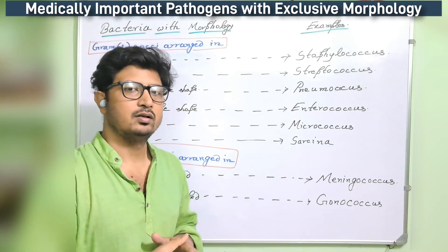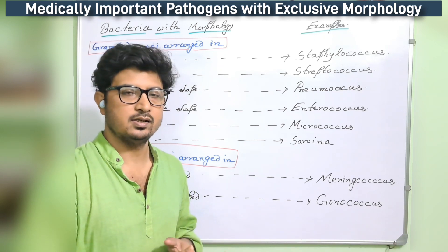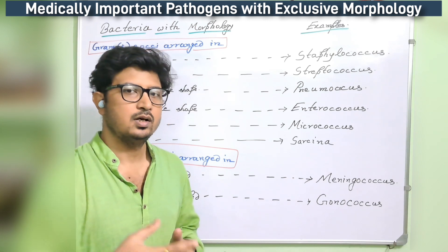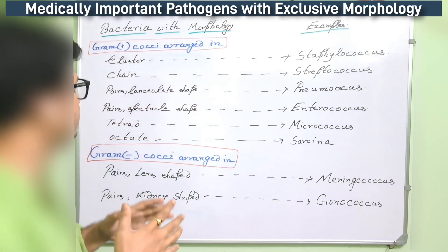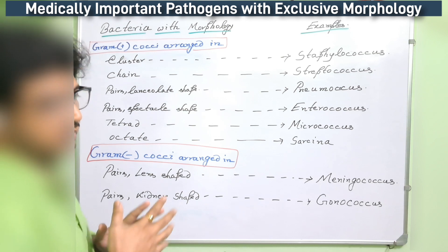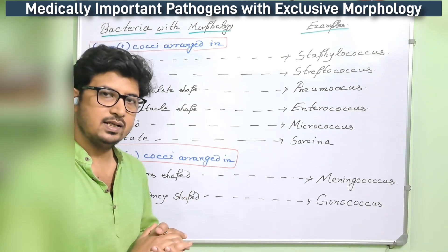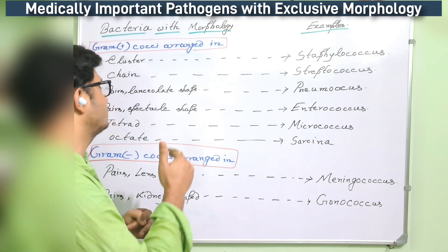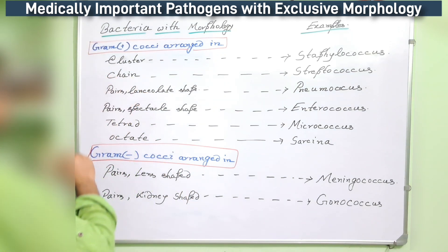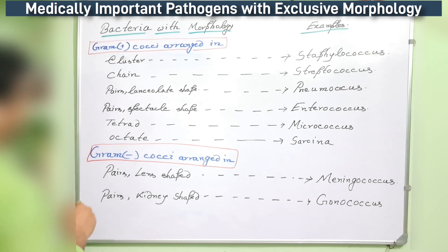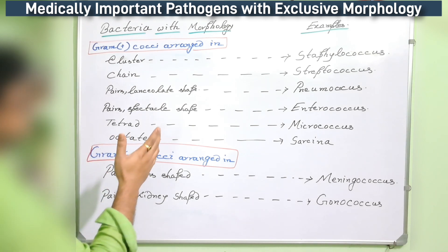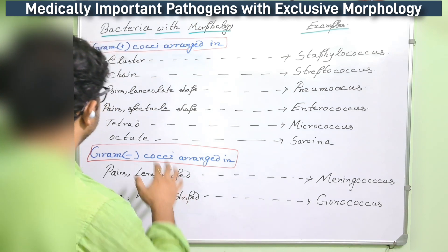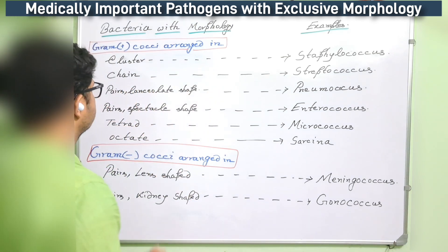We identify bacteria with gram-staining to find gram-positive and gram-negative. Of course there are exceptions, but first let's start with gram-positive cocci. It can be bacilli or cocci, and within these there are subdivisions. In gram-positive cocci, the cluster arrangement is represented by Staphylococcus, and in chain form the example is Streptococcus.